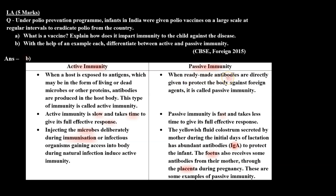Passive immunity: When ready-made antibodies are directly given to protect the body against foreign agents, it is called passive immunity. Active immunity is slow and takes time to give its full effective response. Passive immunity is fast and takes less time to give its full effective response. Injecting microbes deliberately during immunization, or infectious organisms gaining entry into the body during natural infection, induces active immunity.